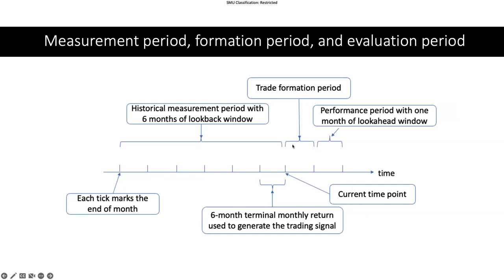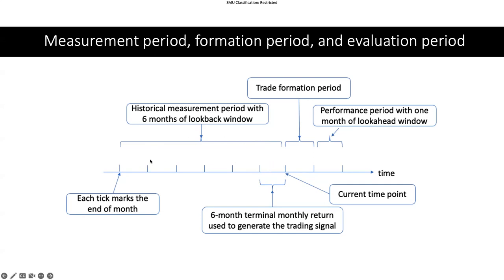There are different terms used in the momentum training strategy. Assume this is our time curve and this is our current time point. At this point, there are three different periods: the measurement period, the formation period, and the evaluation period. The measurement period looks at the historical data used to determine momentum — in this case, six months, where each interval is one month. Going back six months is the historical measurement period, which falls within the look-back window.